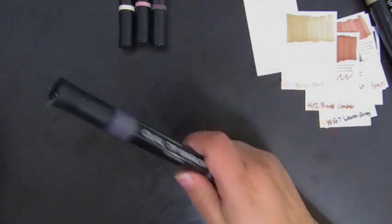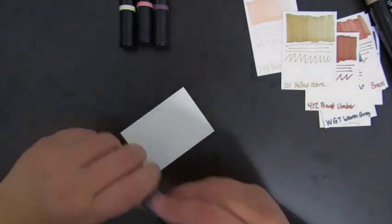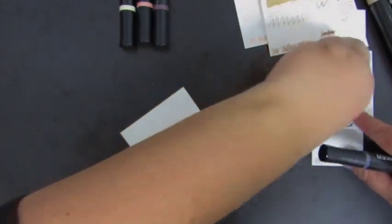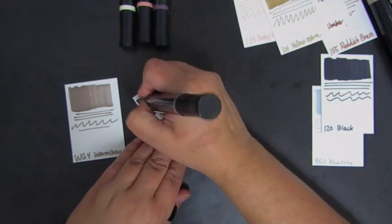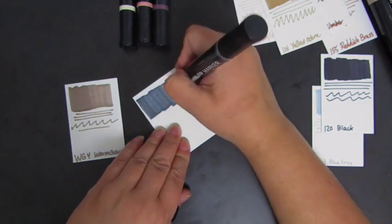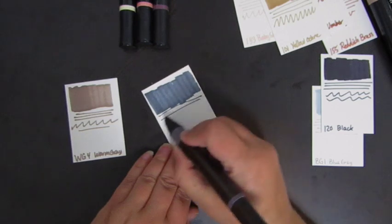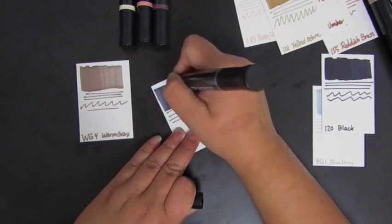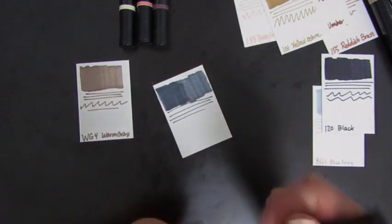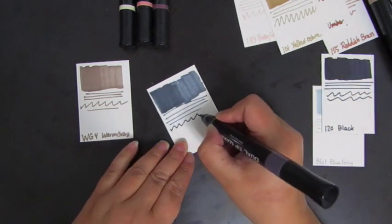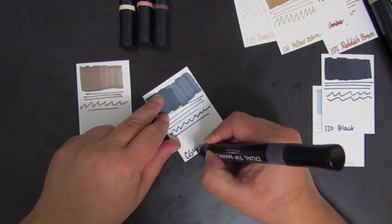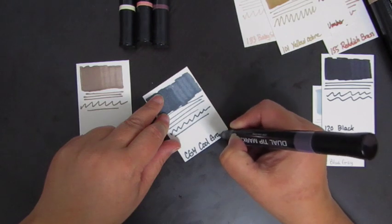Cool gray. So let's see, compared to the warm gray, this is CG4 and there is a warm gray. So let's compare these two. Yep, it's definitely cool gray. So we can see this feathers out a lot more than the other markers. It does bleed a lot more, which means it's probably got a lot more alcohol in it. So this is cool gray.